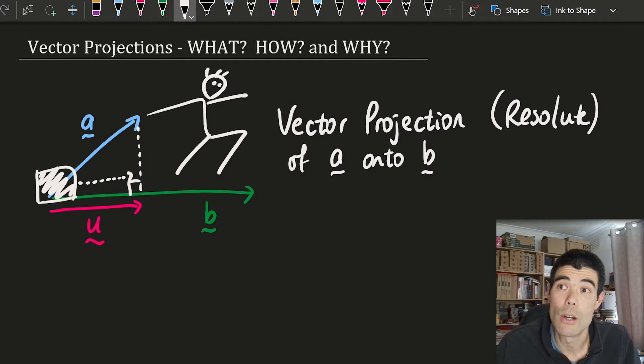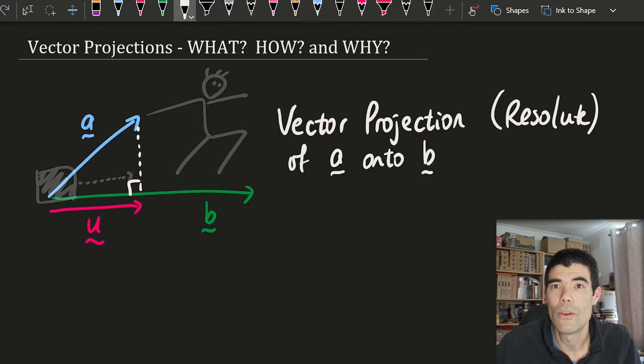So the object is going to slide along the ground and the amount of force that's traveling in the direction of the ground is going to be the vector projection or vector resolute of a in the direction of b.